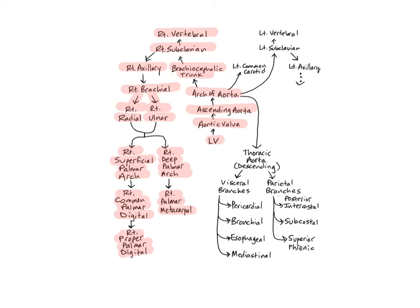Going back to the aorta, the left common carotid artery is the second artery that branches directly from the arch, and supplies the left side of the head and neck. The third and final branch of the arch is the left subclavian artery. Remember, there is no left brachiocephalic trunk — the left subclavian branches directly off the arch of the aorta. Like the right subclavian, it runs under the clavicle at the base of the neck, where it branches into the left vertebral artery. It then continues on as the left axillary artery before it leaves the trunk and moves into the left upper arm. It has the same blood distribution pattern as the right subclavian artery.